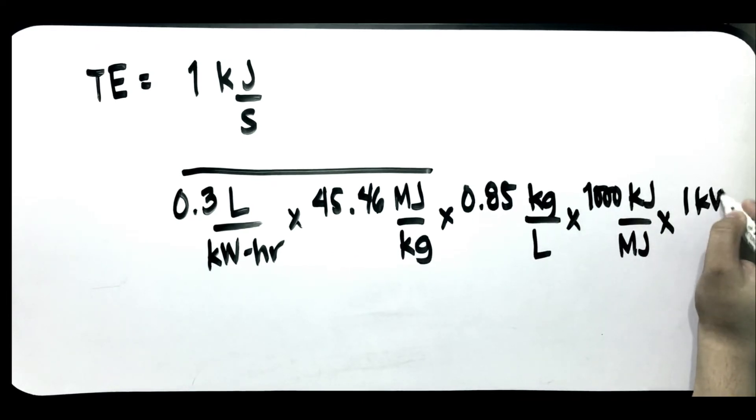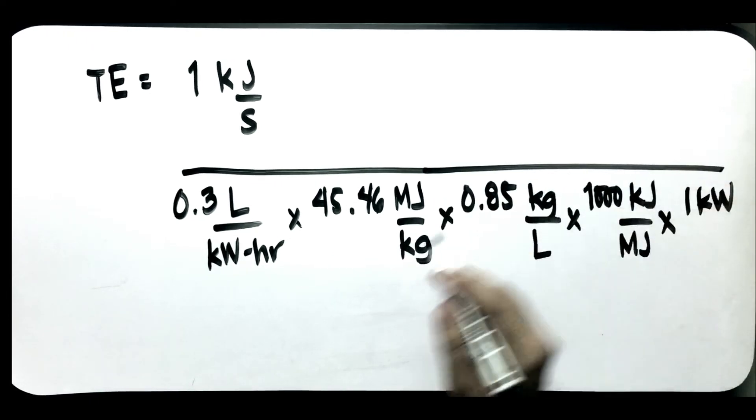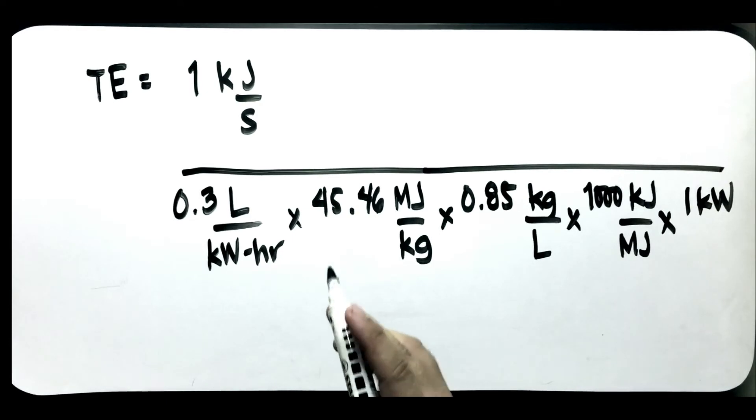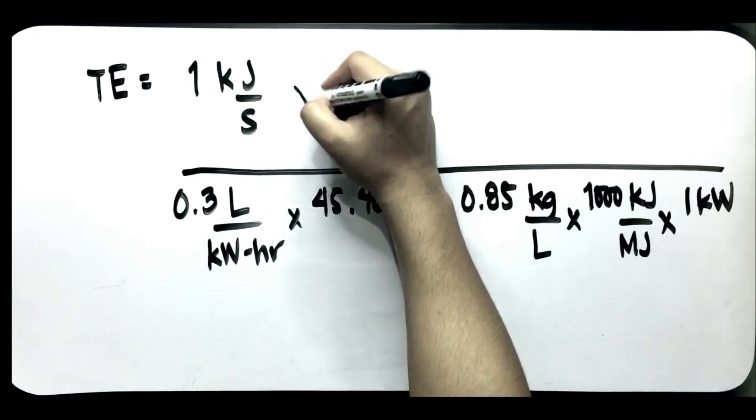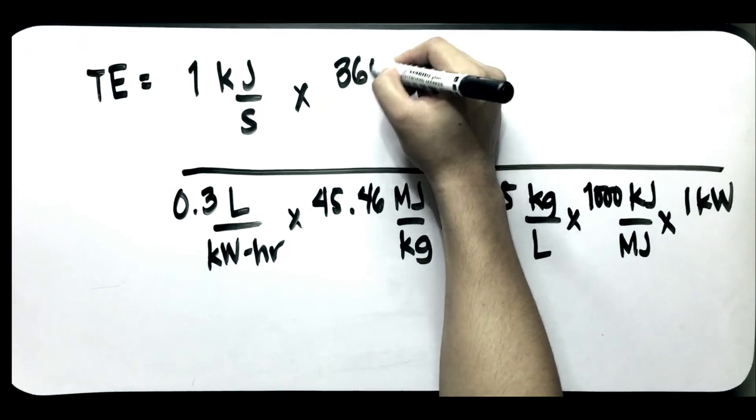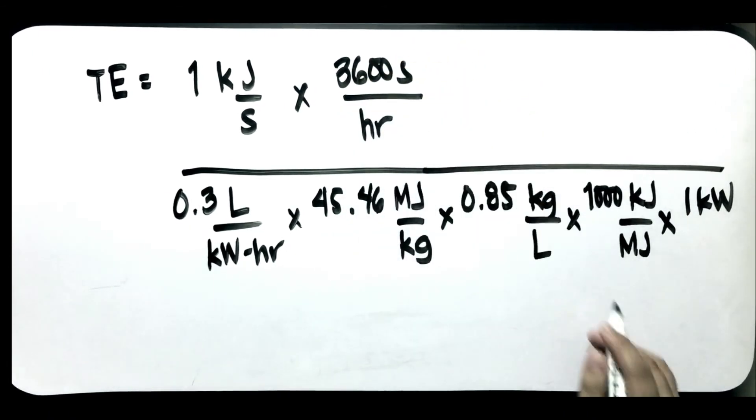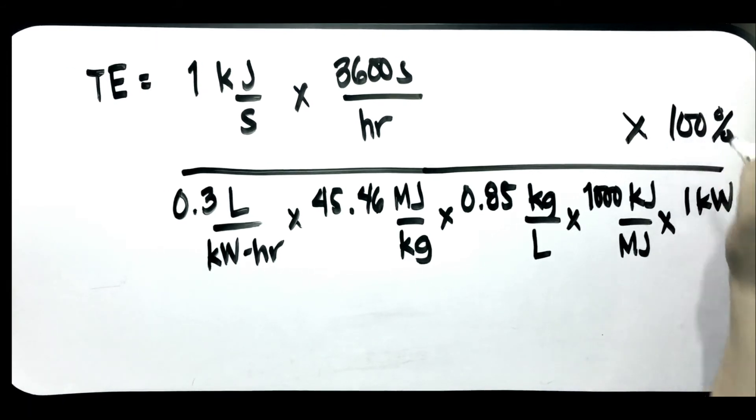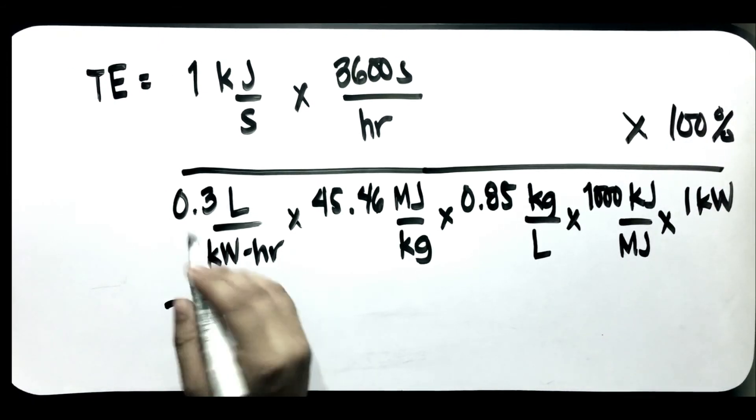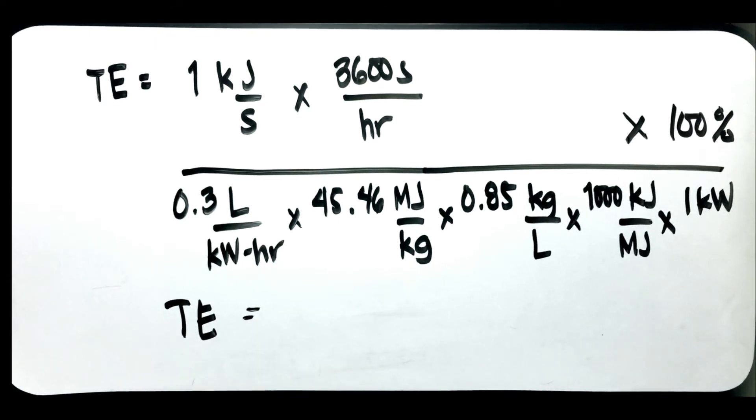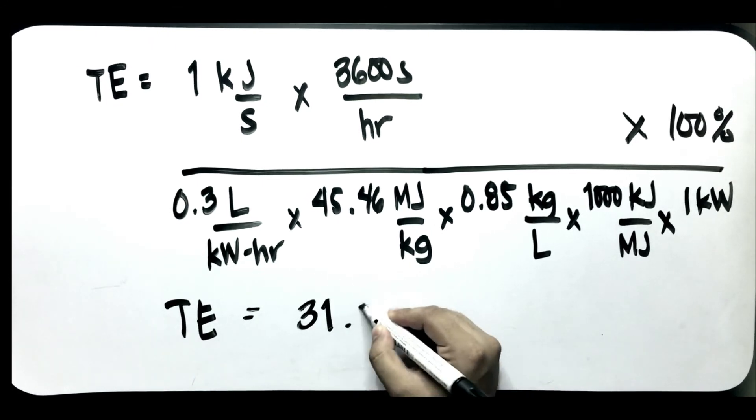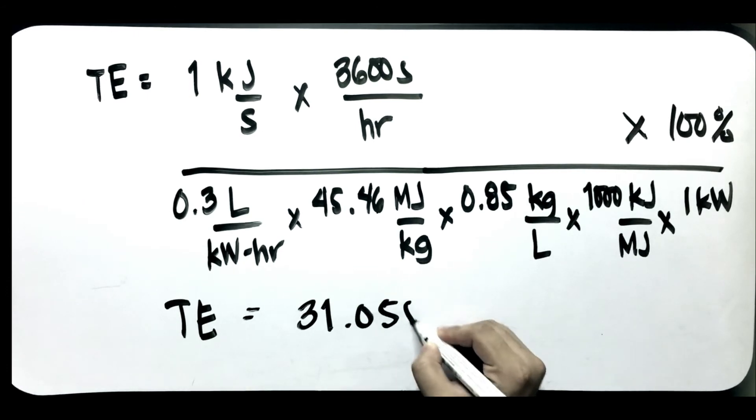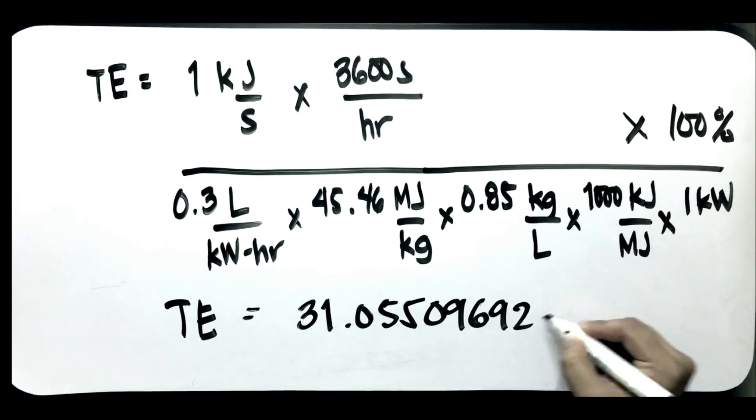Cancel natin yung 1 kilowatt. Since naka hour naman ito and seconds ito, multiply natin siya by 3,600 seconds per hour. Lahat ito is times 100%. Pag kinumpute natin ito, makukuha natin yung thermal efficiency is 31.0509692%.